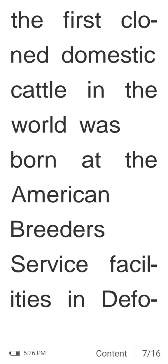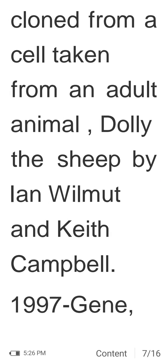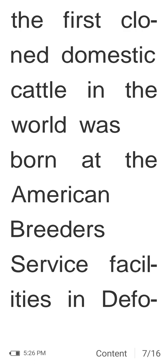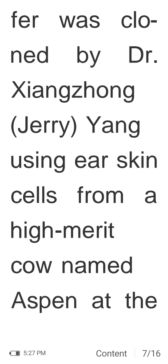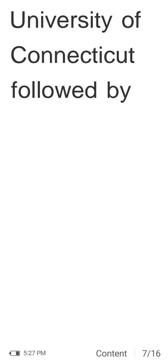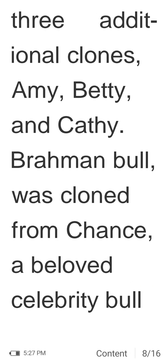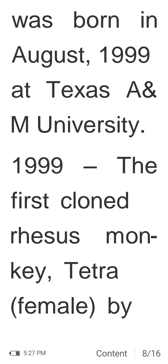In 1996, Dolly the sheep became the first mammal cloned from a cell taken from an adult animal, achieved by Ian Wilmut and Keith Campbell. In 1997, Gene, the first cloned domestic cattle, was born at the American Breeders Service facility in DeForest, United States. In 1998, the first cloned mouse Cumulina was produced, followed by Daisy the Holstein, cloned by Dr. Xiangzhong Jerry Yang using ear skin cells from a high-merit cow named Aspen at the University of Connecticut, with three additional clones: Amy, Betty, and Cathy. A Brahman bull was cloned from Chance, a beloved celebrity bull, born in August 1999 at Texas A&M University.